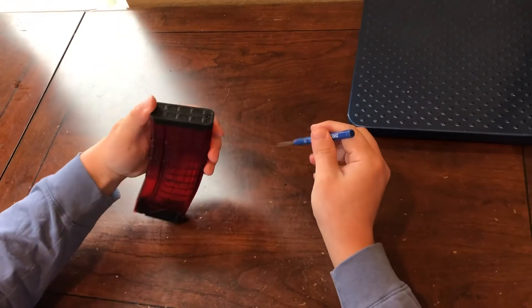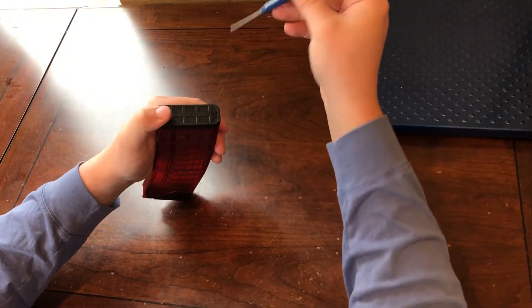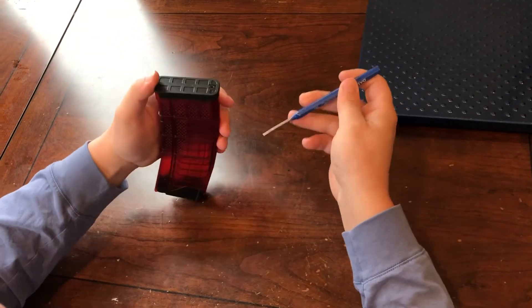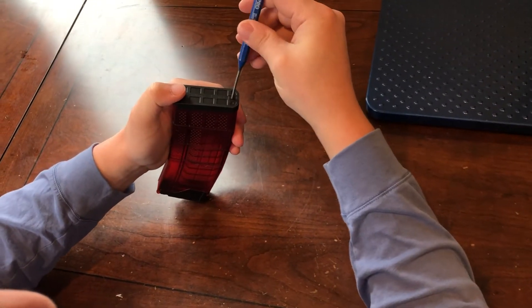As far as disassembly goes, we're just going to do that process in reverse. So take something, this is just a little punch, you could use a screwdriver or scissors, whatever, something and just push this square plate down.